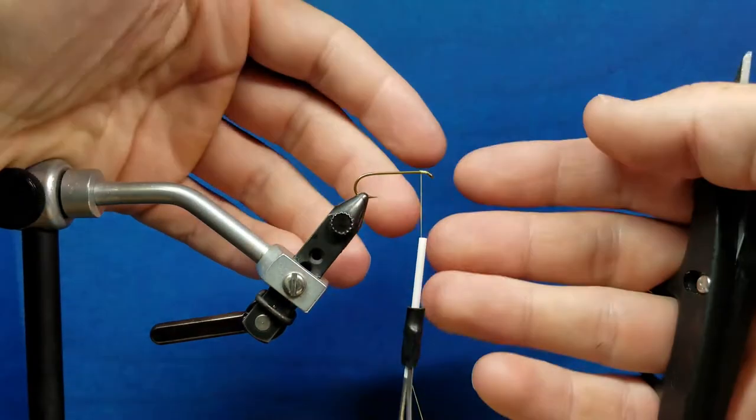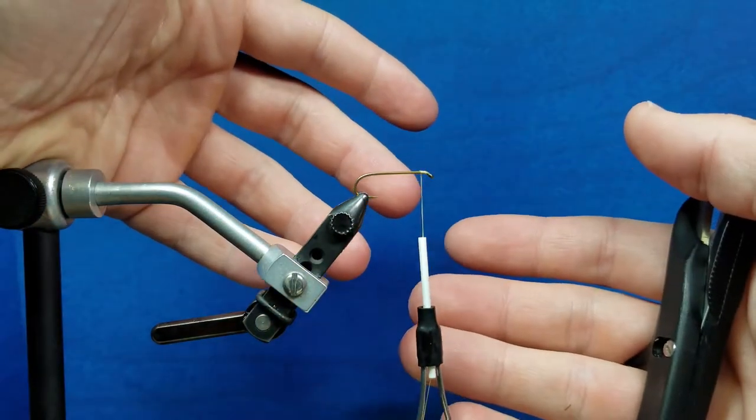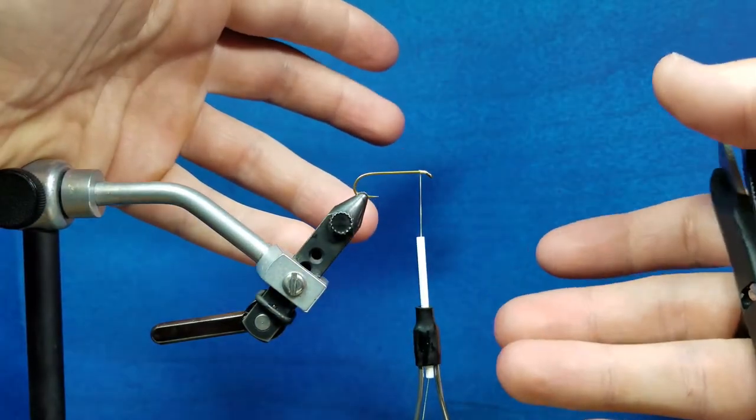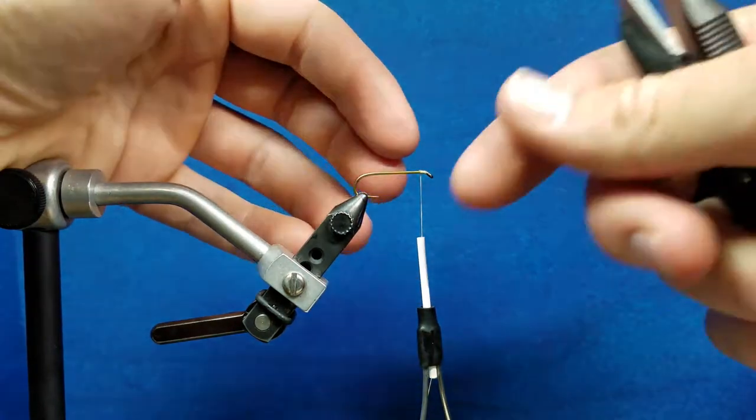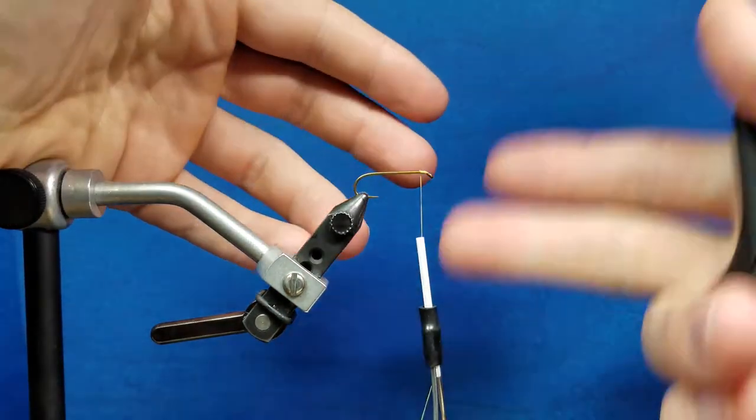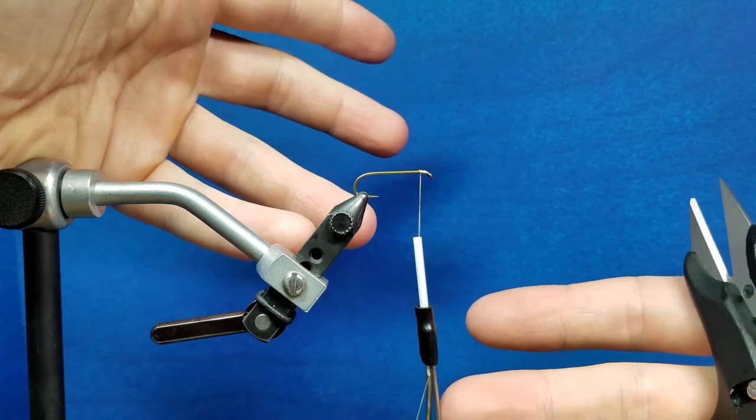When it comes to tying, if I'm ever able to carry out a technique without a tool, I prefer to do that. It saves me the time of having to reach down, pick it up, use it, and put it back. So when it comes to whip finishing, I prefer to whip finish my flies by hand.